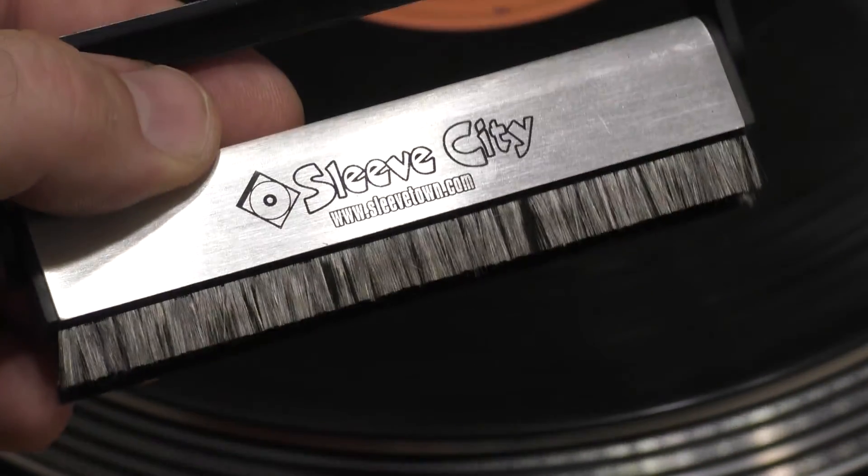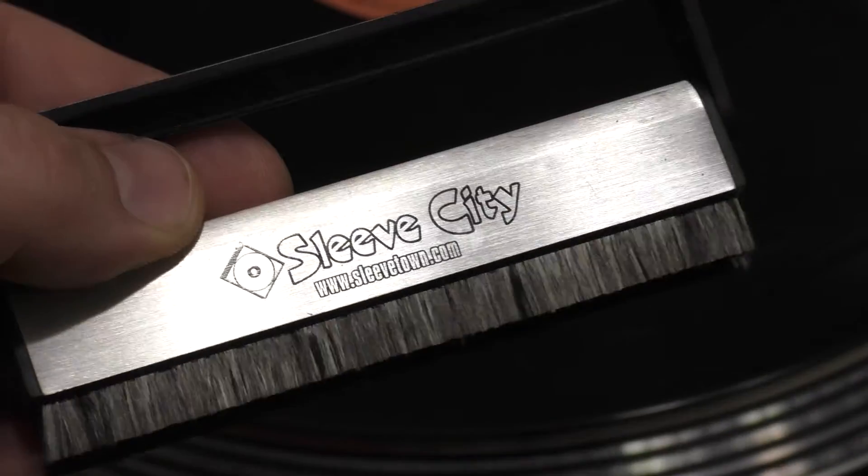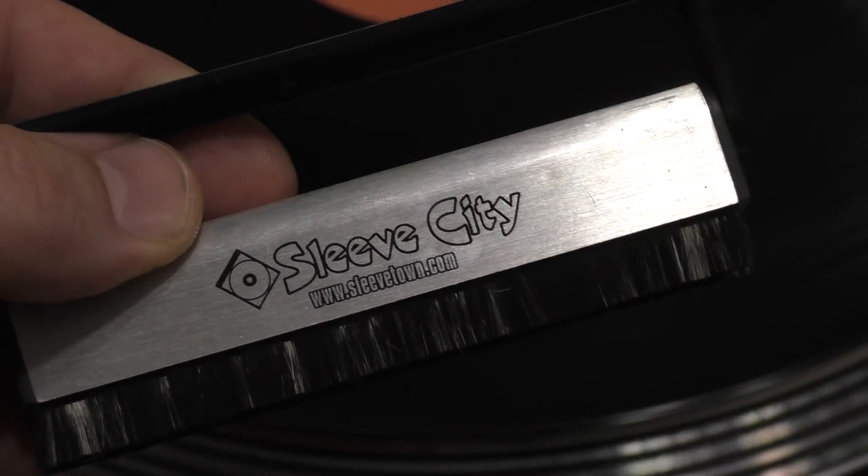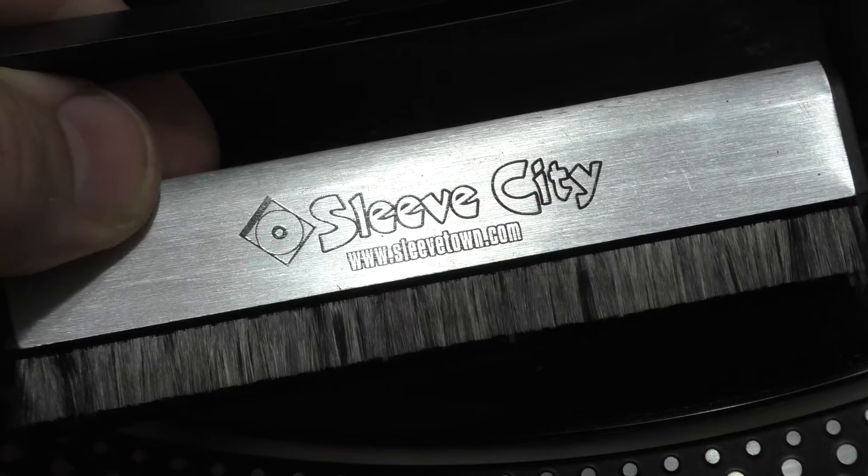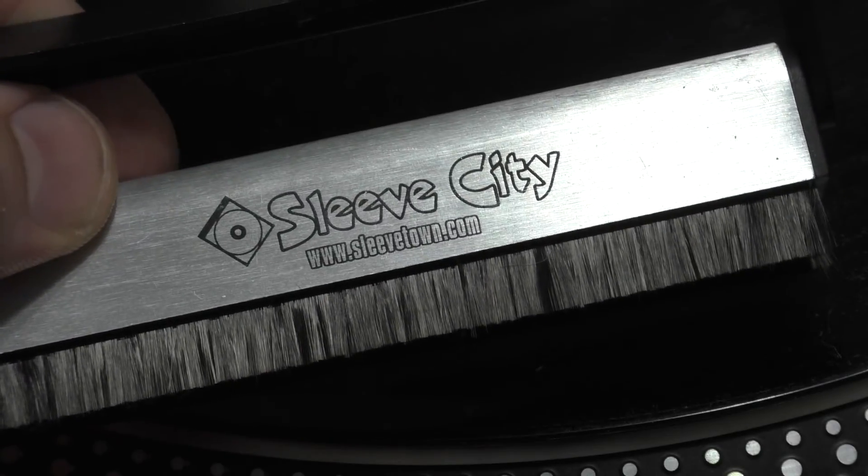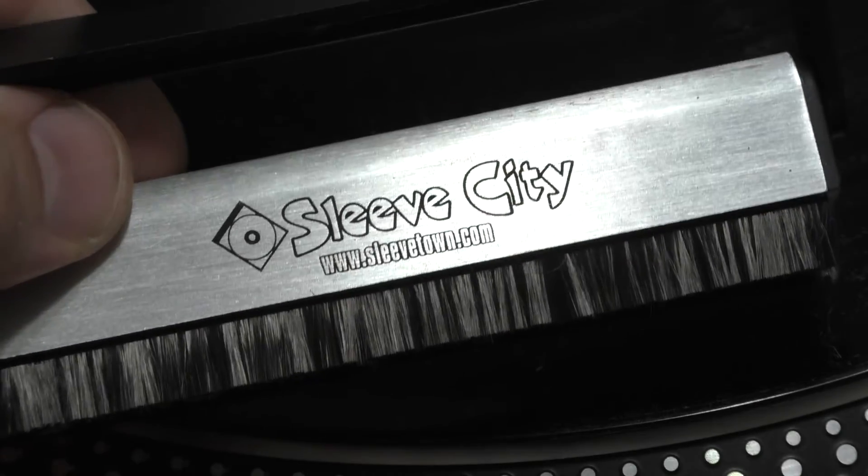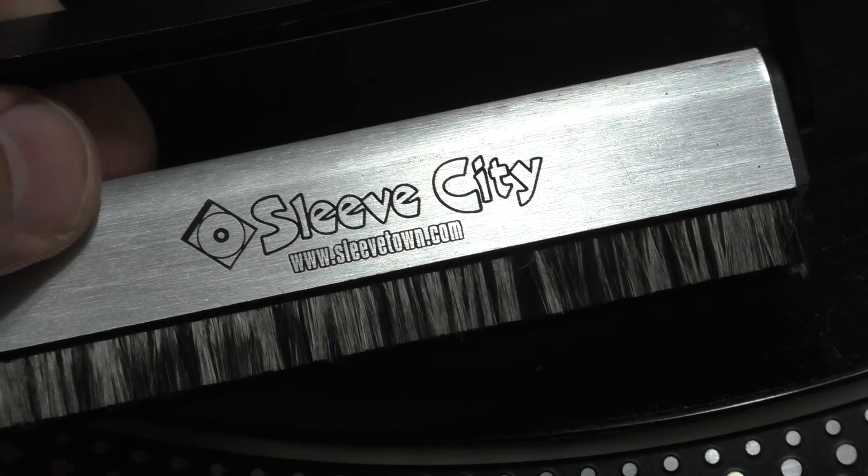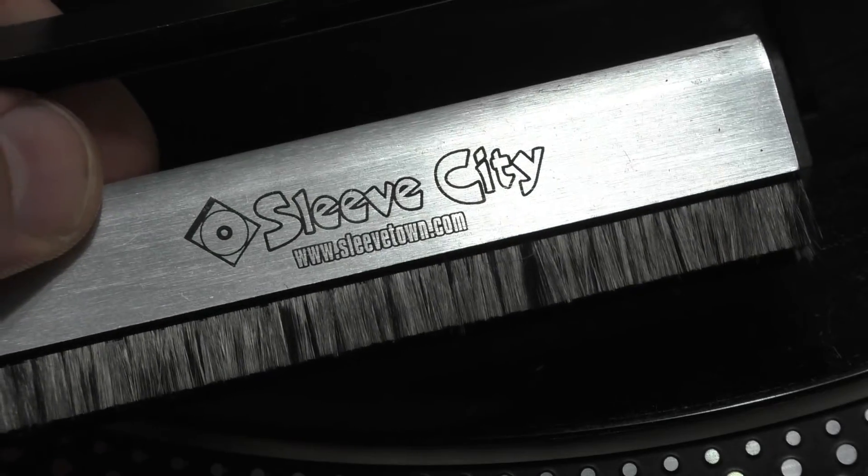I'm going to start with a brush. A record brush is an essential accessory for vinyl playback. This is an anti-static carbon fiber brush that I acquired through Sleeve City. Vinyl records hold static electricity, especially in arid climates. An anti-static brush helps neutralize the static charge so the dust particles don't stick to the record. Instead, they are attracted to the carbon fiber bristles on the brush.